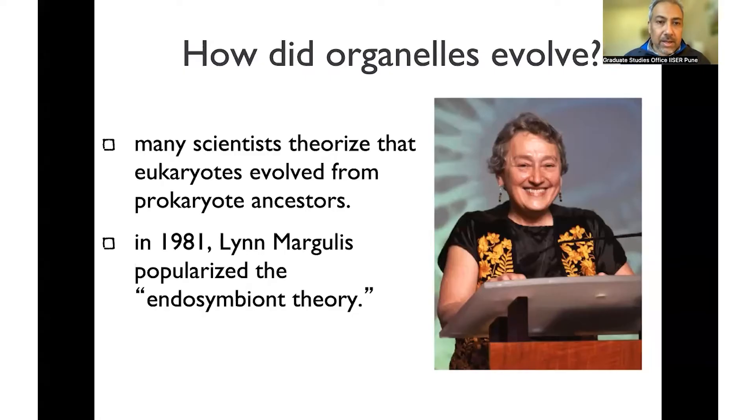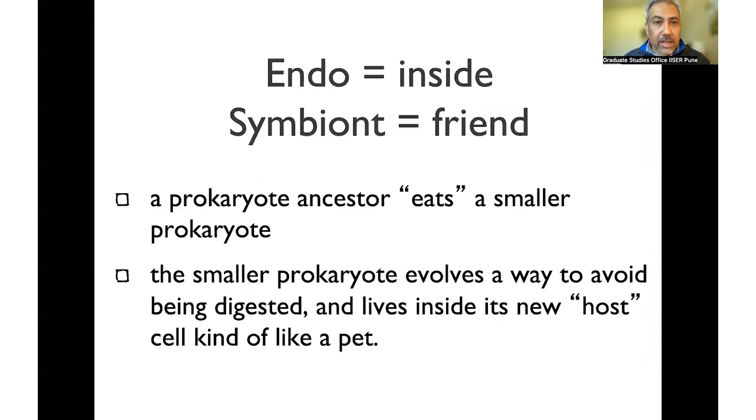The mitochondria is a good example of this. The whole idea of the endosymbiont theory is that it's endo, which is inside, and symbiont, which is a friend. The fact that these two symbionts came together and increasingly became dependent on each other allowed for this complexity to evolve.